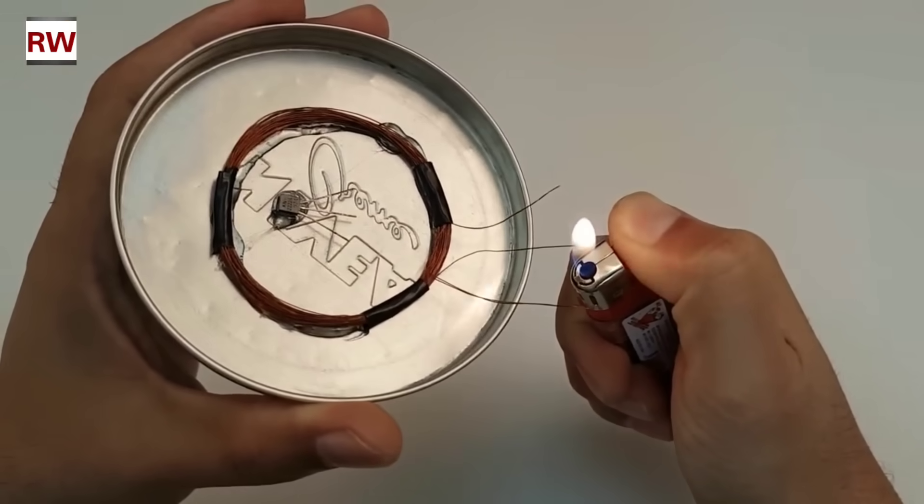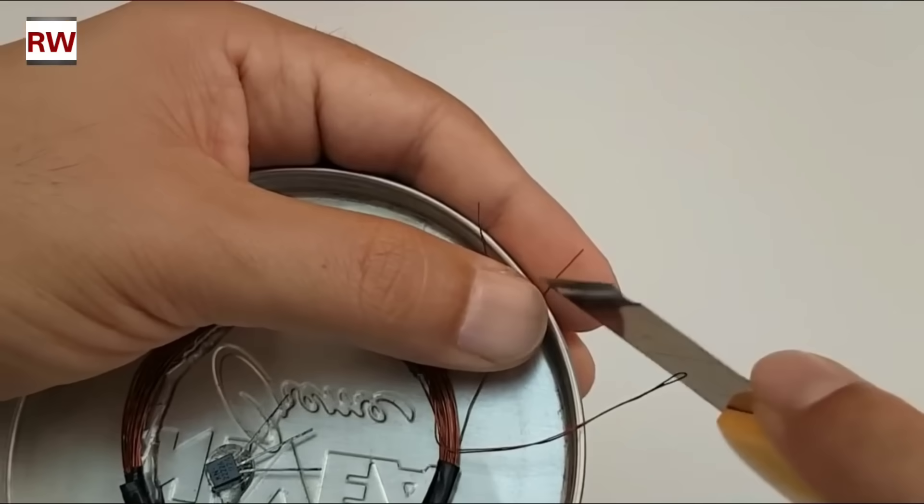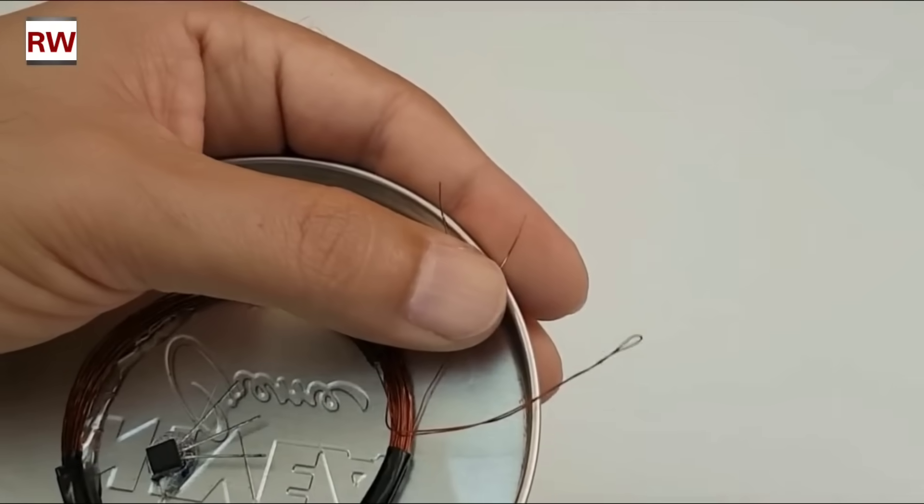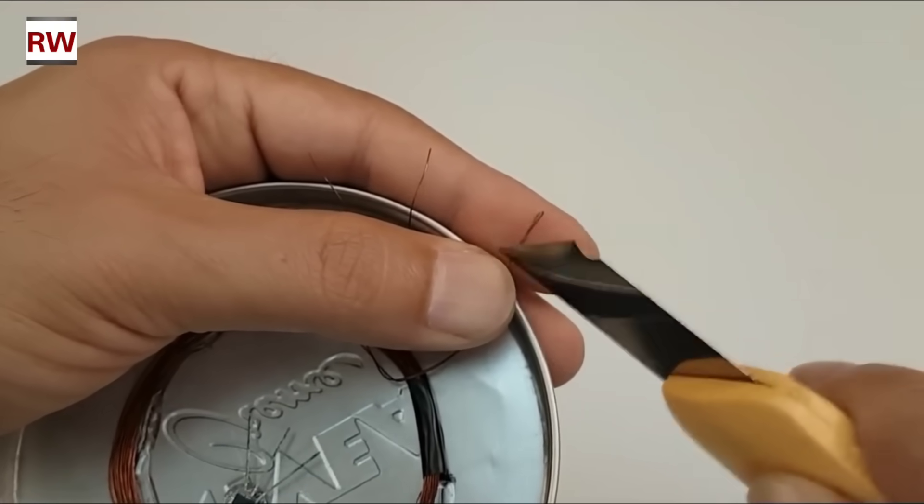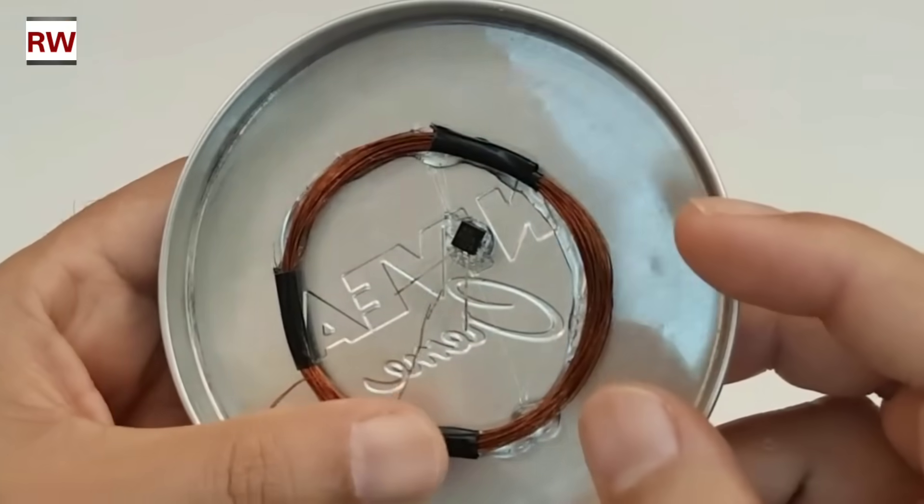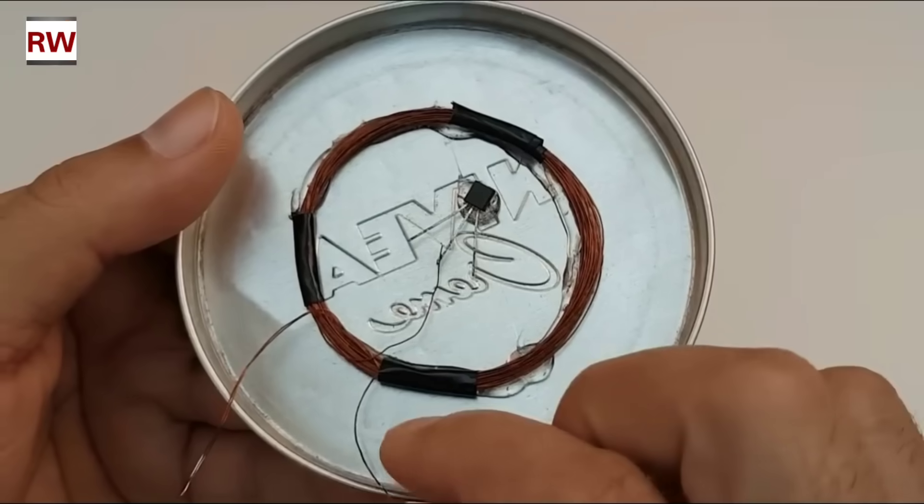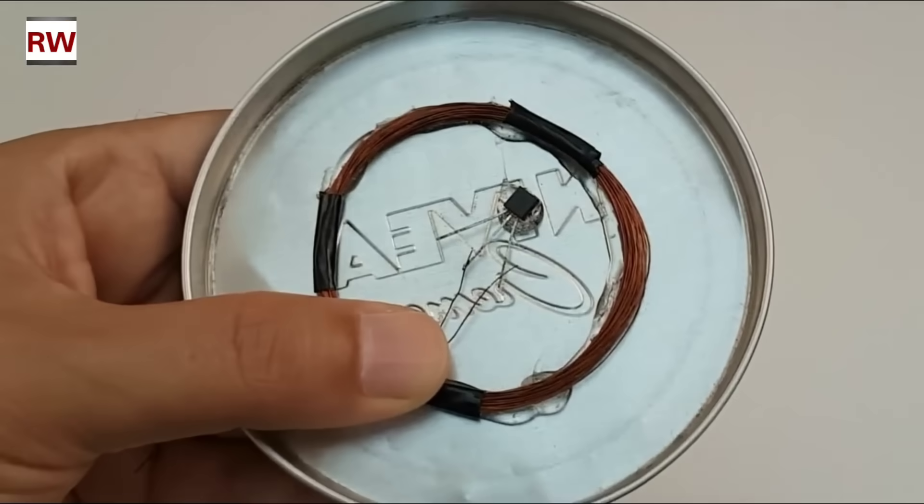Now, we'll take the three wires coming out from the coil and carefully burn off the enamel coating using a flame. This will expose the copper underneath. Once that's done, we'll follow the wiring exactly as shown in the diagram to complete the connections properly. To ensure a strong and secure connection, we are using a soldering iron to solder the wires in place. This helps improve conductivity and keeps the wiring firm and reliable.